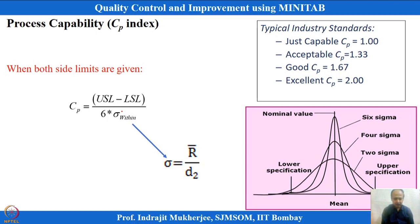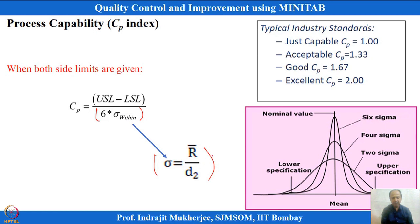The voice of the process is expressed as 6 multiplied by the standard deviation of the process. This sigma has to be estimated — it is also known as sigma within variability. MINITAB expresses this variability as sigma equals R-bar divided by d2, which represents within-sample variability.